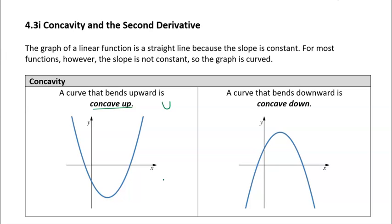If it doesn't bend upward, then it bends downward, and we call that concave down. So that's the definition of what concavity means.